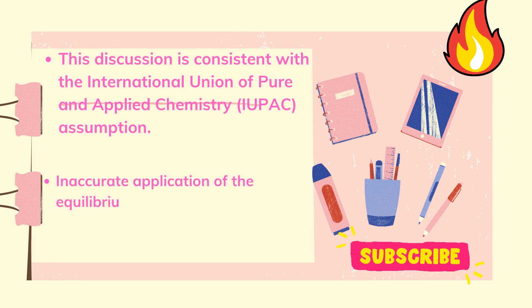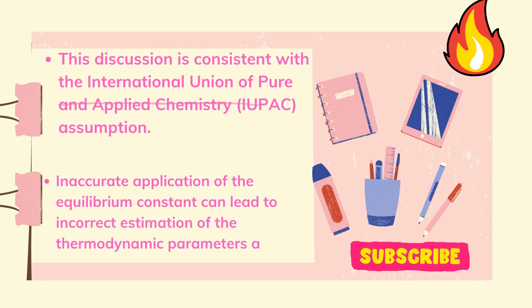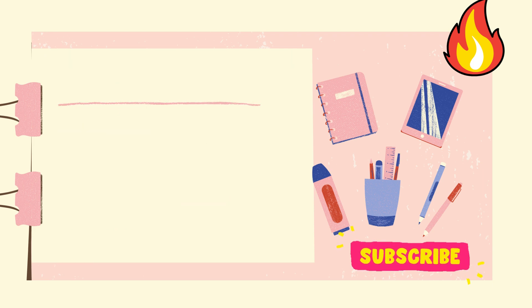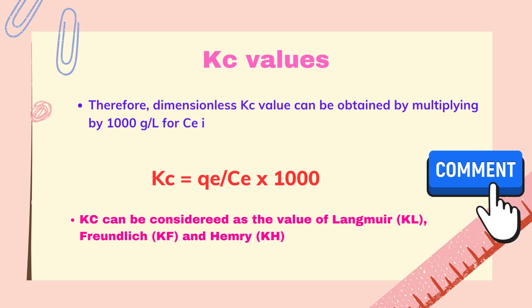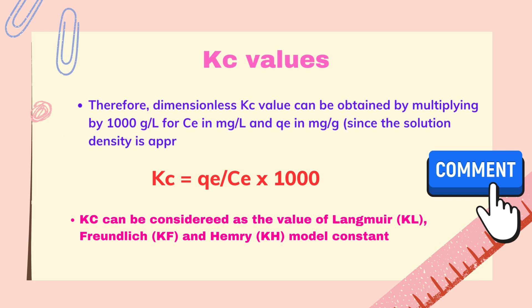However, inaccurate application of the equilibrium constant can lead to incorrect estimation of the thermodynamic parameters and vice versa. The correct values of the dimensionless Kc can be obtained by multiplying 1000 gram per liter for concentration in milligram per liter and KL in milligram per gram, since the solution density is approximately 1000 gram per liter or 1 gram per milliliter.